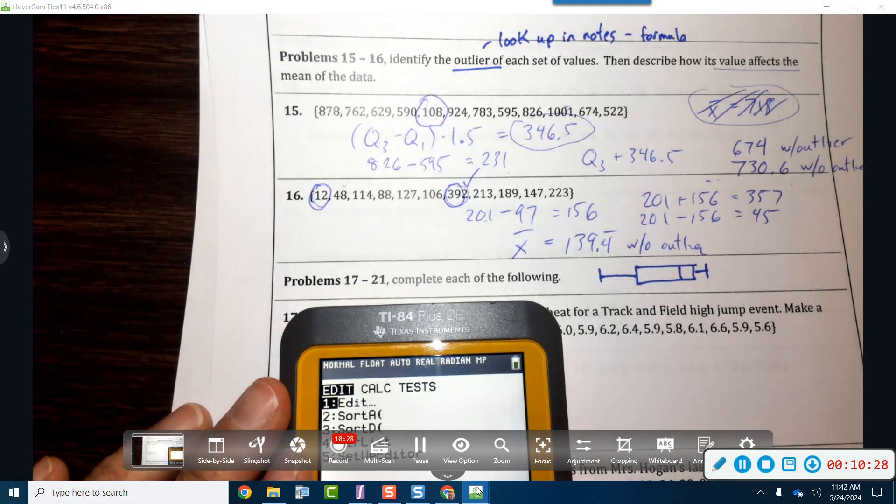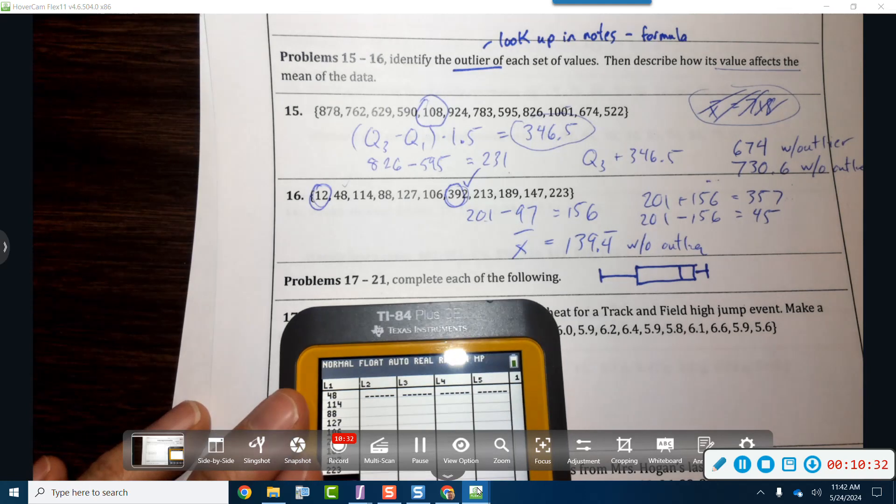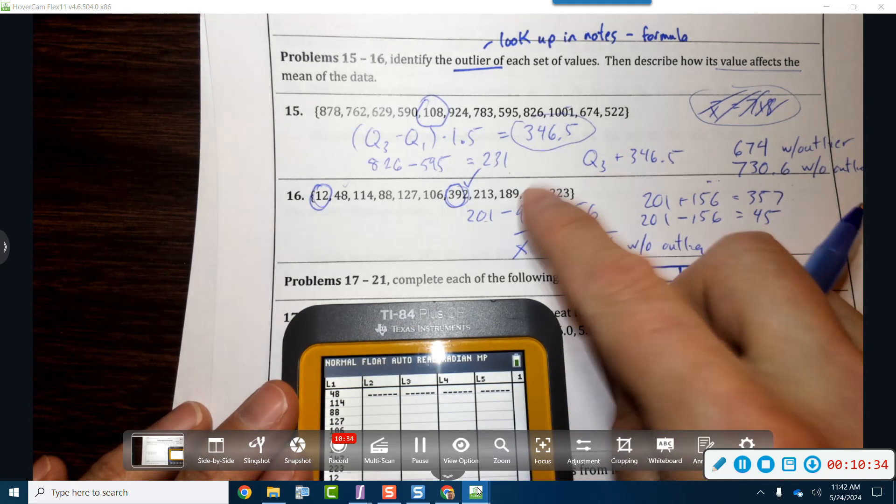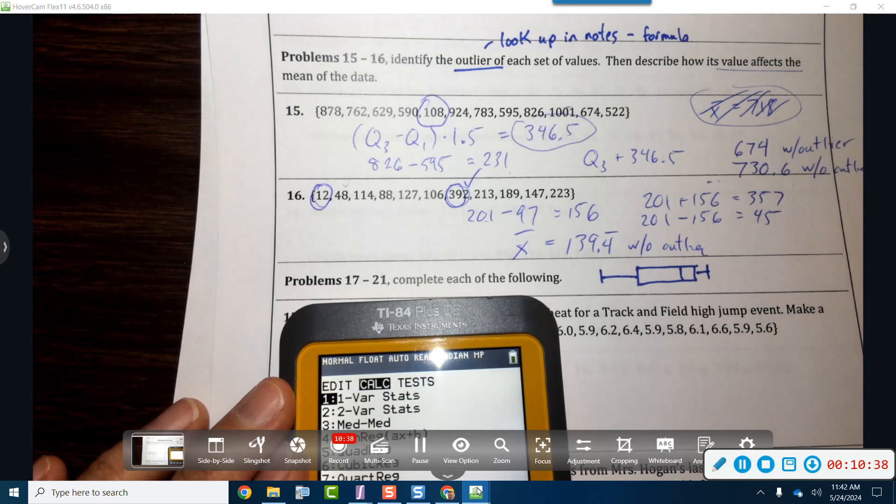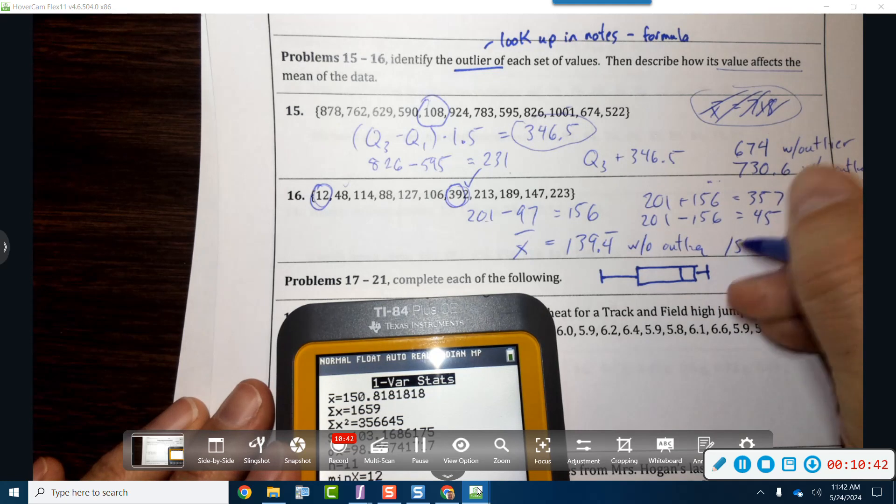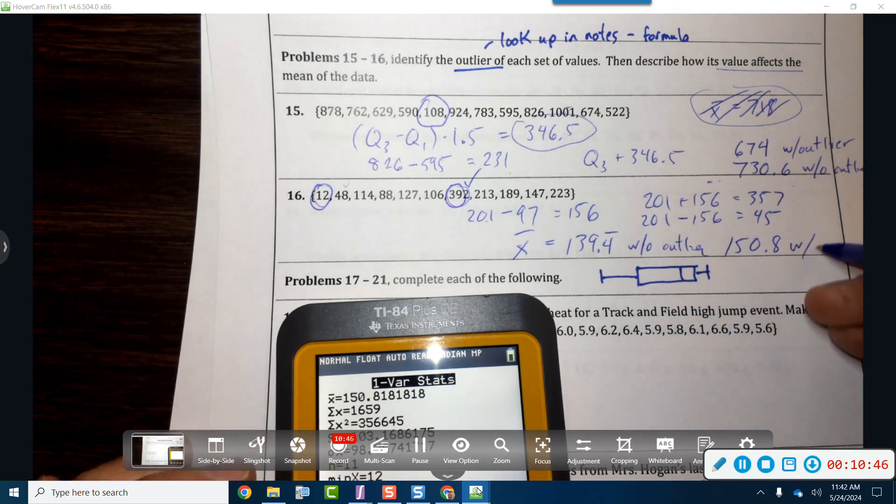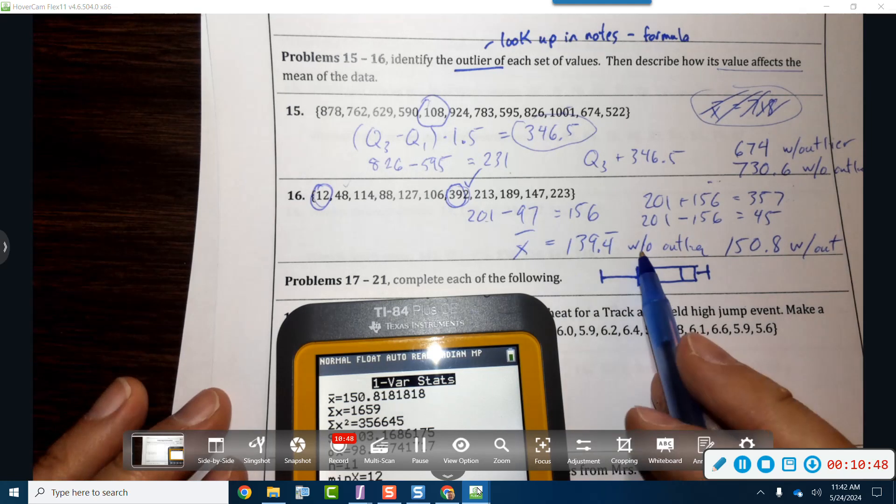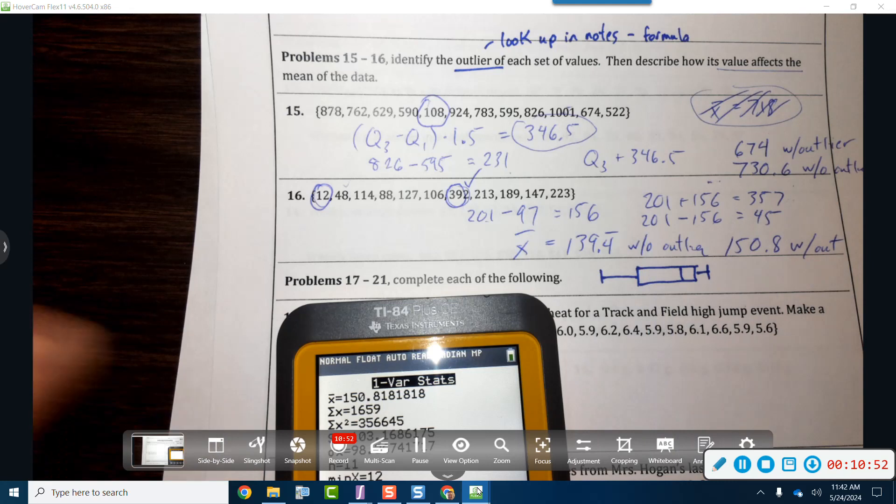Now let's go ahead and put that data back in. We're going to put in the 12 and the 392, and we'll do that again. Now we've got 150. So with the outliers, without the outliers, the average goes down by a little over 11.